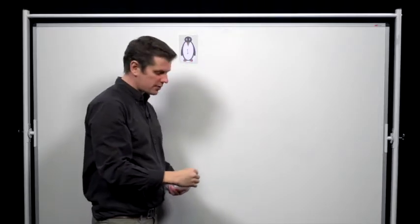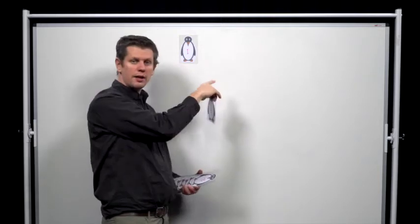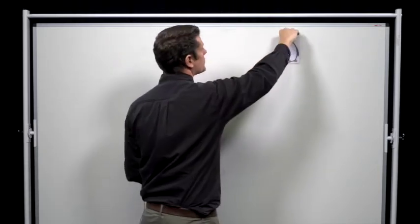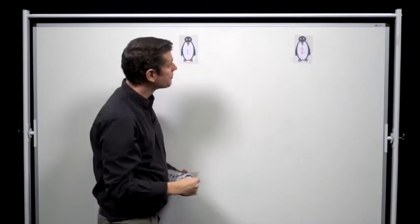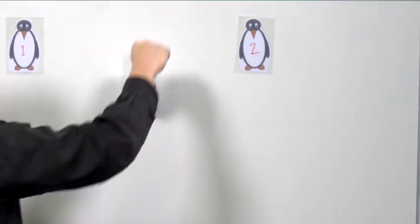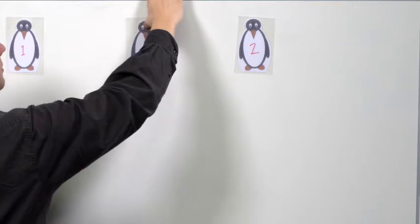Next, penguin 2 arrives. They come along immediately behind penguin 1, but I'm going to leave a lot of space for them so that lots of other penguins can fit in between later. Then penguin 3 comes along and they join the queue behind penguin 1.